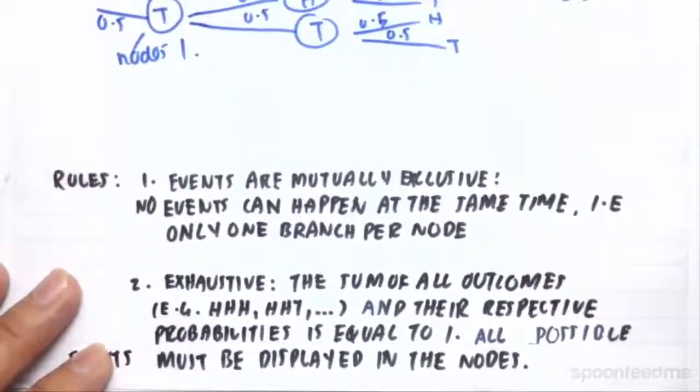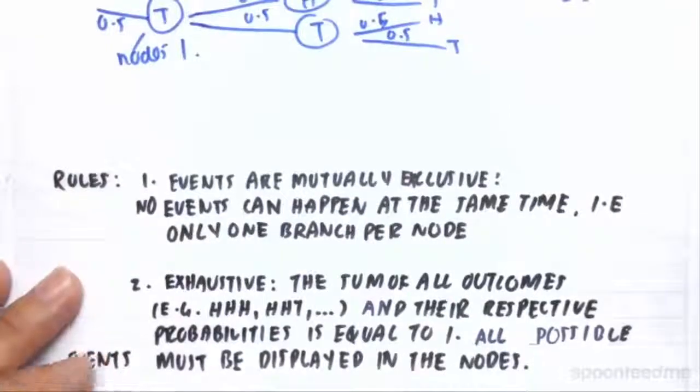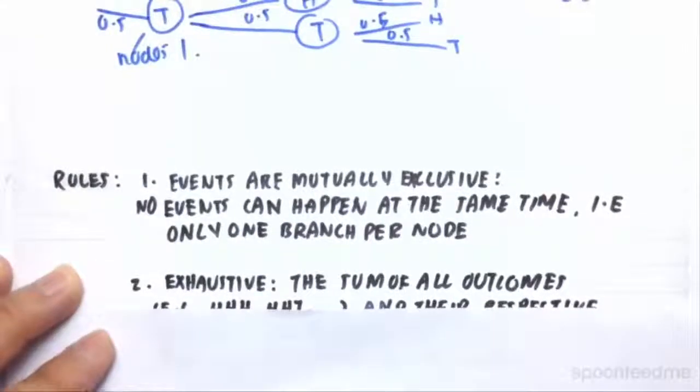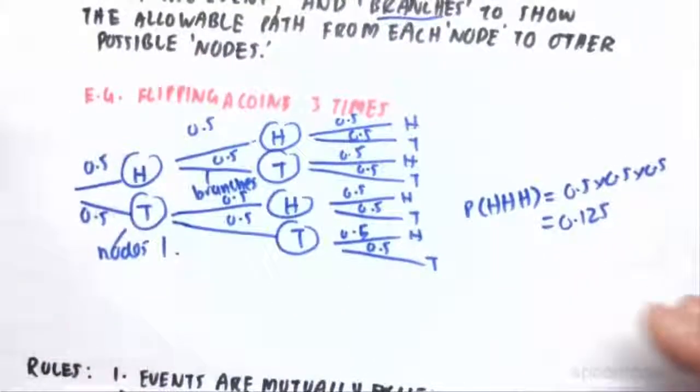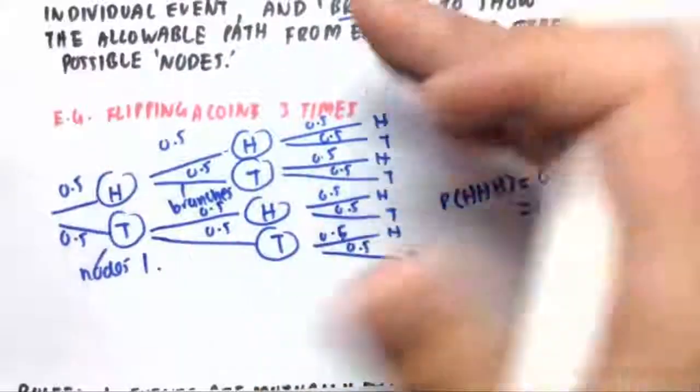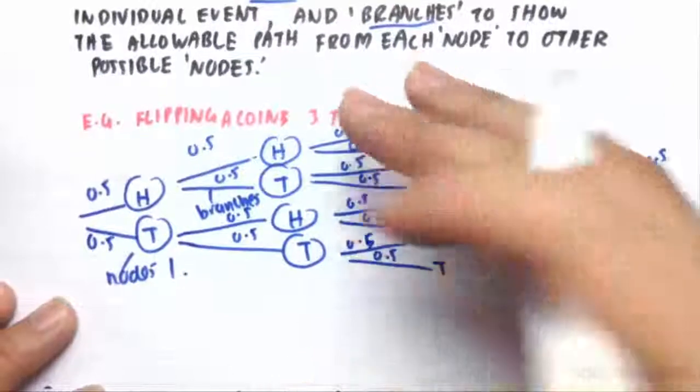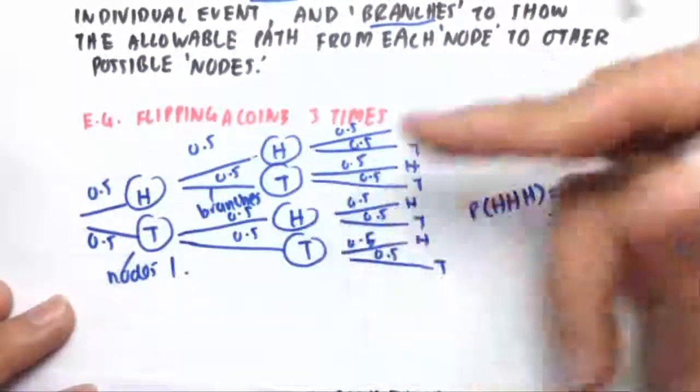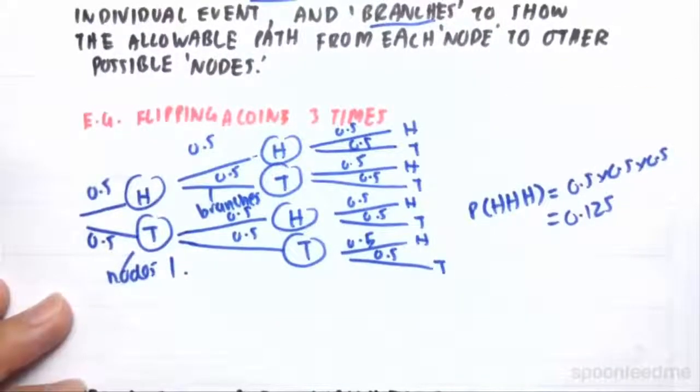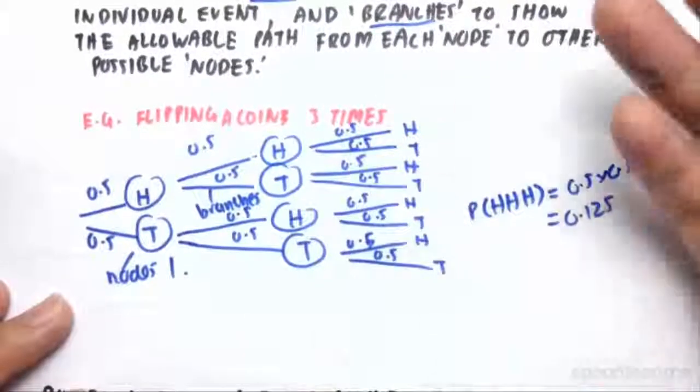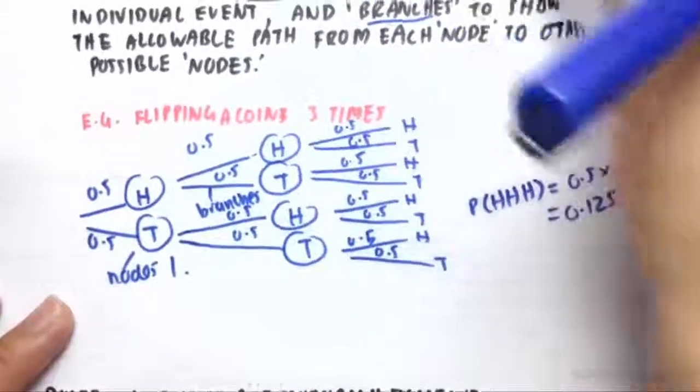So the rules of using a probability tree. Rule number one, events are mutually exclusive. So no events can happen at the same time, i.e. only one branch per node. For example, if you flipped a head on your first flip of a coin, on your next flip of a coin, you can't flip both a head and a tail. They're mutually exclusive. So only a head can occur or a tail can occur.